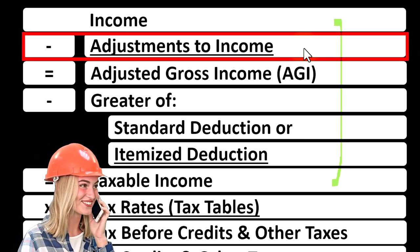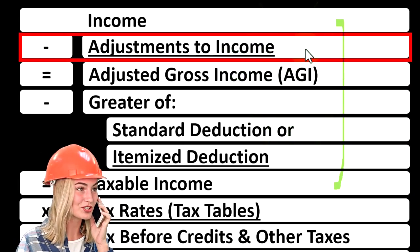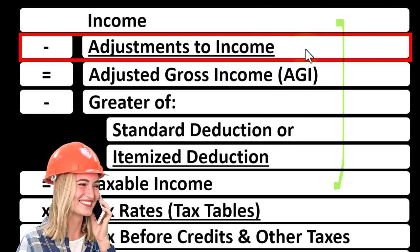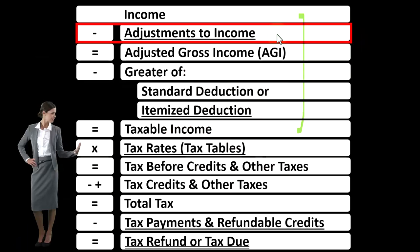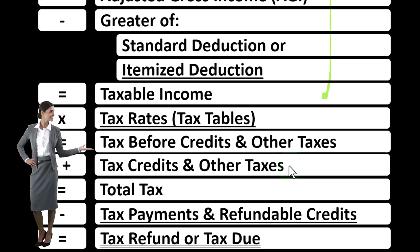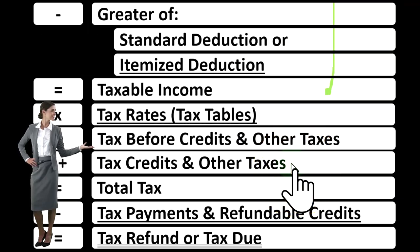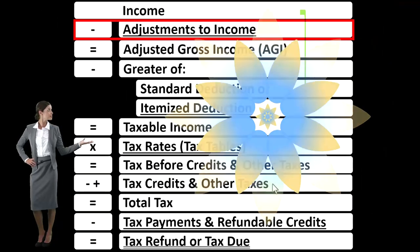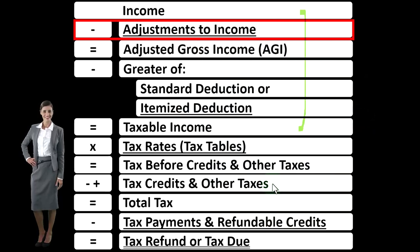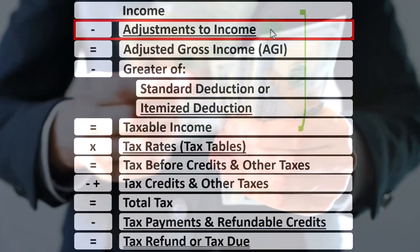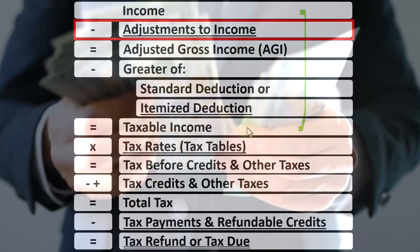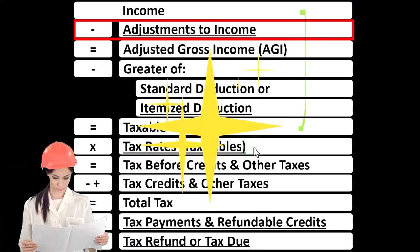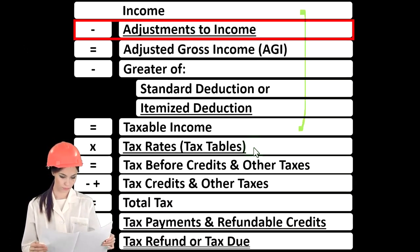One of the primary examples would be an IRA deduction — that's the one that probably comes to mind most often for the adjustments to income. Also remember that deductions are different from credits further down below, which is an important distinction. If you got $1 of deduction versus $1 of a credit, you would rather have the dollar credit because that's a dollar-for-dollar decrease in the tax you owe or an increase in your refund, whereas a deduction just decreases the taxable income. The actual benefit depends on the progressive tax rates applied to that dollar.